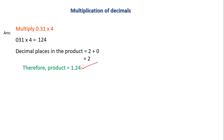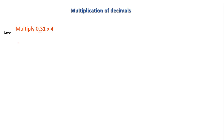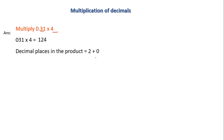Let's quickly recap. First, write the given decimal numbers without considering the decimal point and find the product. Second, find the number of decimal places in the product by counting: in the first number there are two, in the second number none, so decimal places in the product is 2 plus 0, that is 2. Last, convert the product to two decimal places to get the final answer.